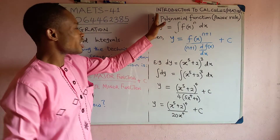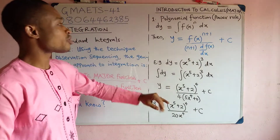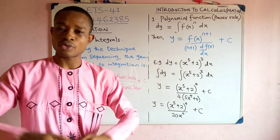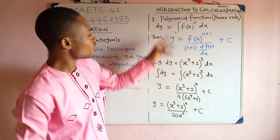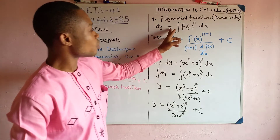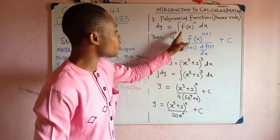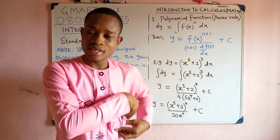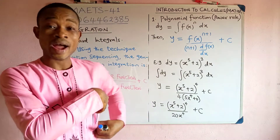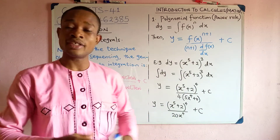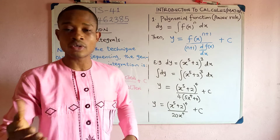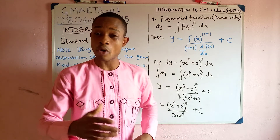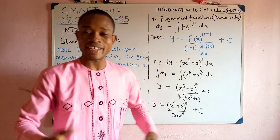Now, we start first with our standard integrals by looking at the polynomial function where we use the power rule. Imagine you're given dy equal to the integral of f(x) raised to the power n dx. This is a polynomial function because of that power n. That n is an integer — it can be a whole number, a fraction, or a negative or positive integer.